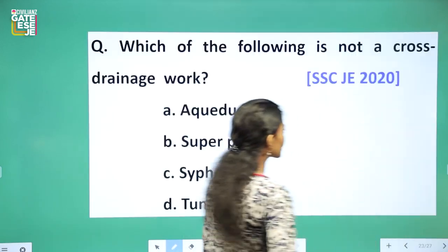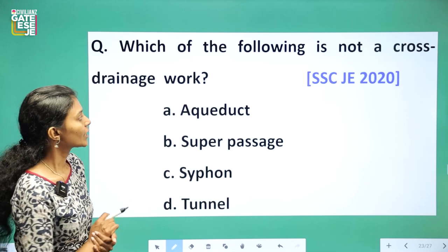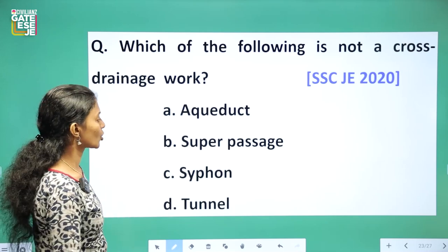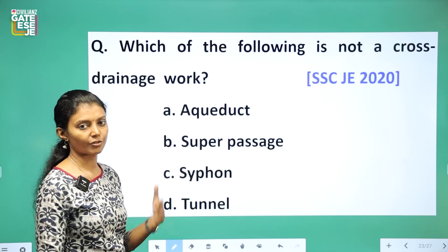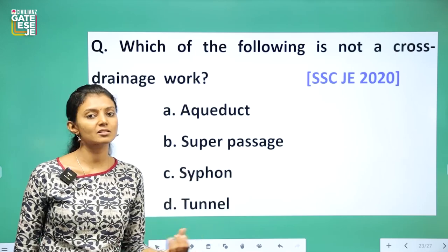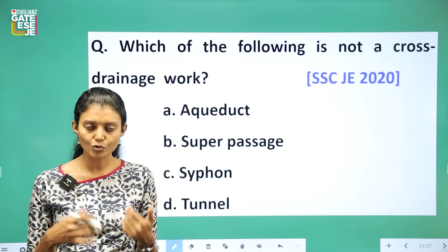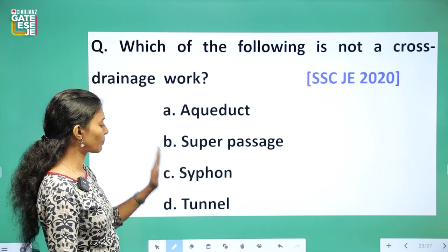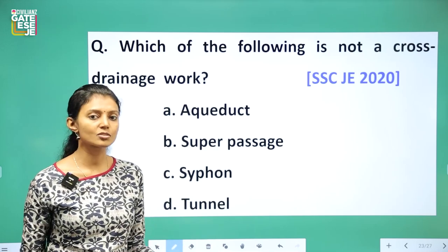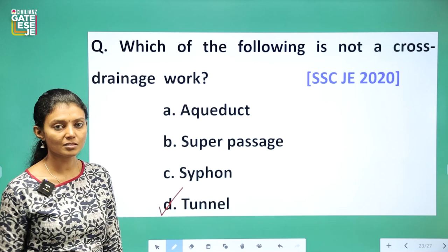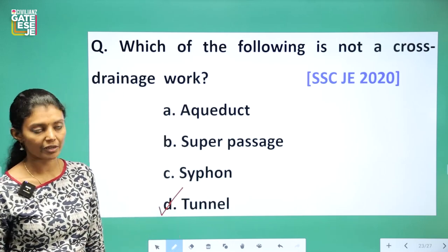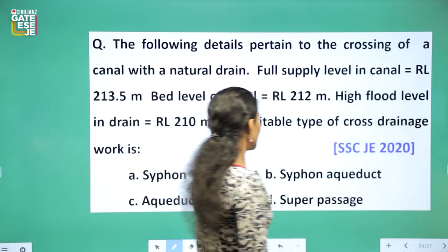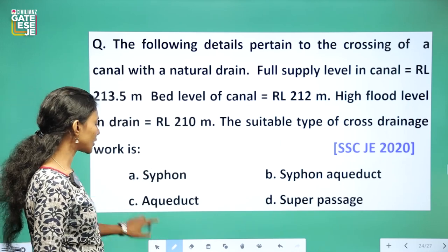SSC JE 2020 question: Which of the following is NOT a cross drainage work? Options given: aqueduct, super passage, siphon (canal siphon), and tunnel. Tunnel is not a cross drainage work, so the answer is Option D: tunnel.